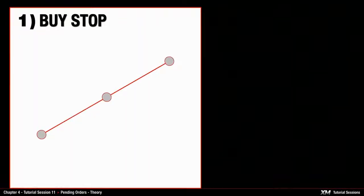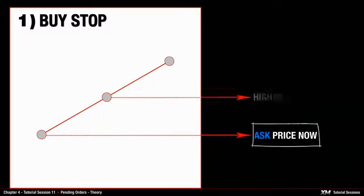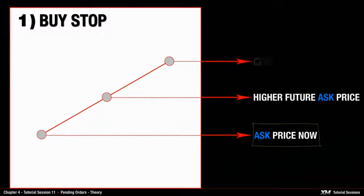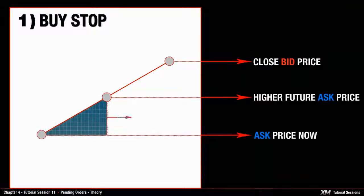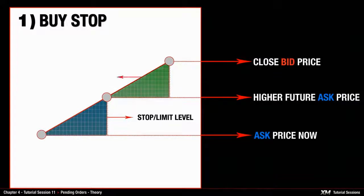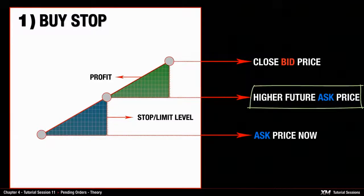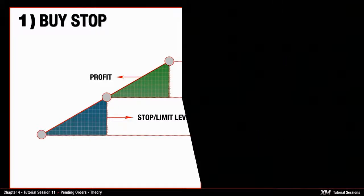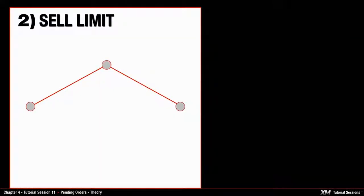Let's start with the graph representation of the buy stop order type. Buy orders are opened at the ask price and closed at the bid price. The buy stop order needs to be opened at a higher future ask price. To make a profit on this type of order, the closing bid price needs to be higher than the opening ask price.